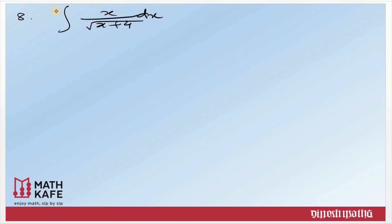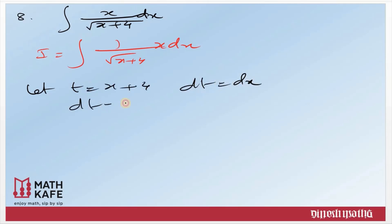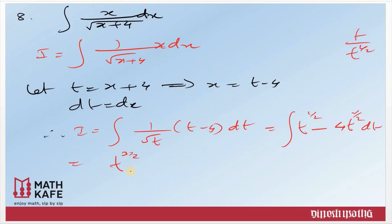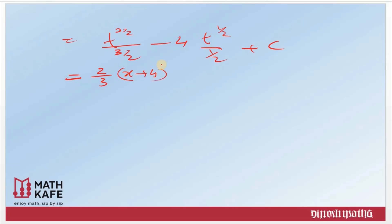Let us consider one more similar question: integral of x/√(x+4) dx. Let t = x + 4, so dt = dx, and x = t − 4. The question becomes I = ∫(t−4)/√t dt = ∫t/t^(1/2) dt − ∫4/t^(1/2) dt = ∫t^(1/2) dt − 4∫t^(−1/2) dt. Integrating: t^(3/2)/(3/2) − 4·t^(1/2)/(1/2) + c. Replacing t = x+4: I = (2/3)(x+4)^(3/2) − 8(x+4)^(1/2) + c.